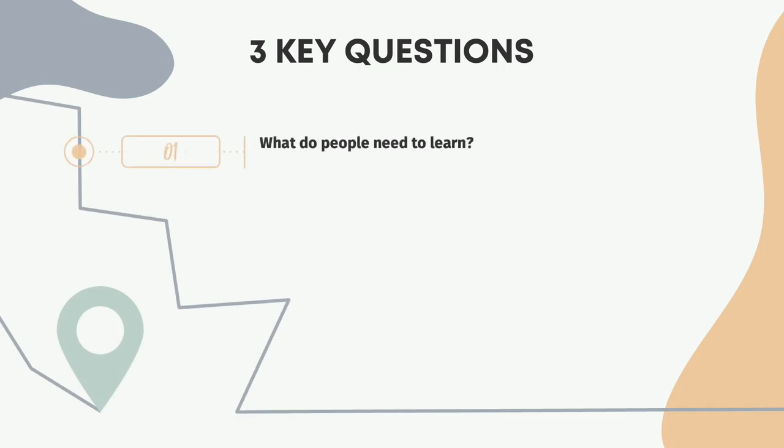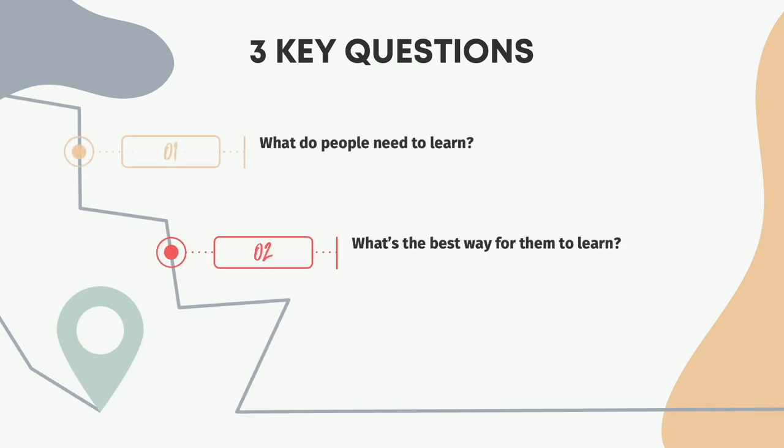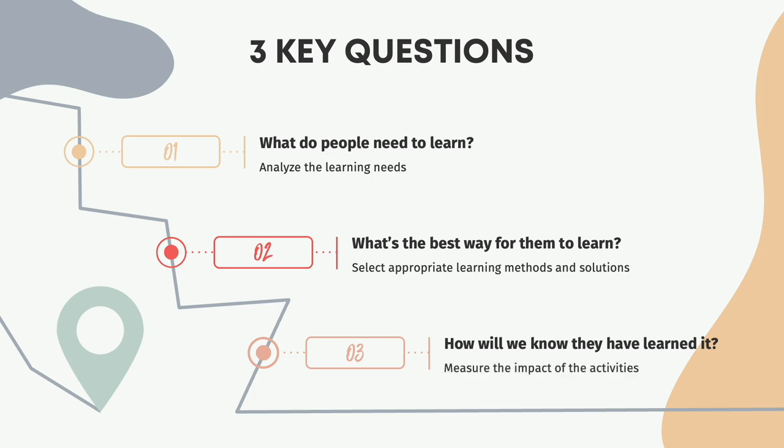The purpose of L&D, in a way, informs what the main responsibilities are. We need to ensure the organization and the individuals within are learning, and this raises three key questions: What do people need to learn? What's the best way for them to learn? And how will we know that they have learned it? These three questions are the defining milestones for any L&D department — we need to analyze the learning needs of the organization, select the most appropriate learning methods, and then measure the impact of our activities on the performance of the learners.